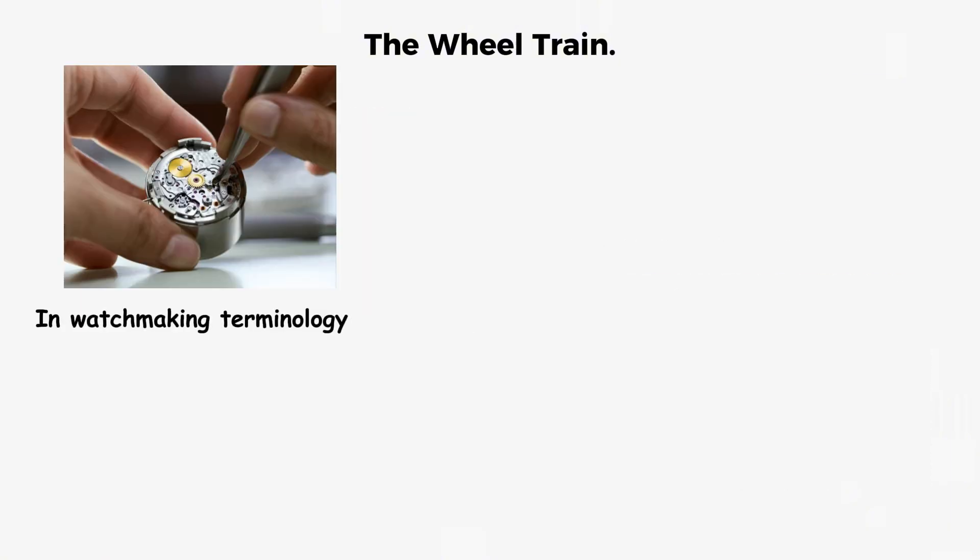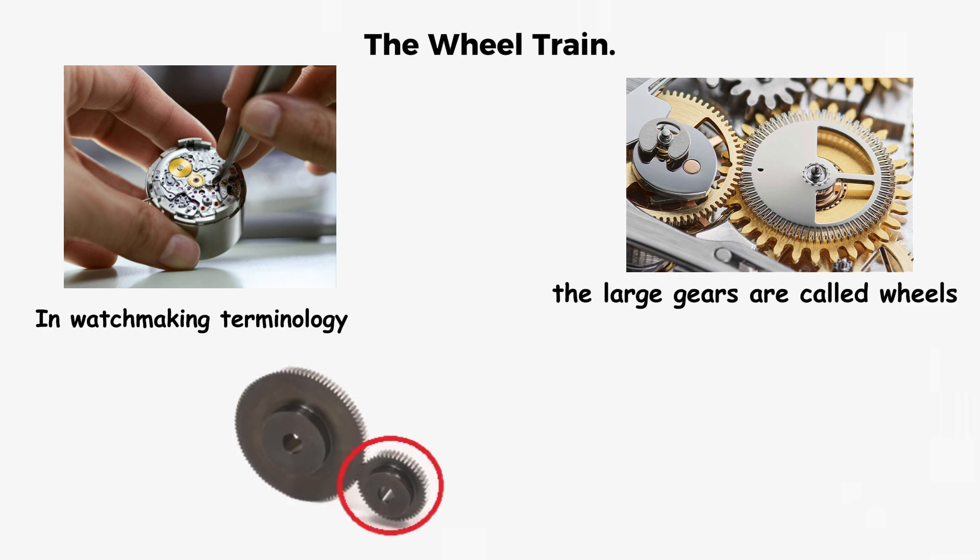In watchmaking terminology, the large gears are called wheels, the smaller gears they mesh with are called pinions, and the shafts holding them are called arbors.